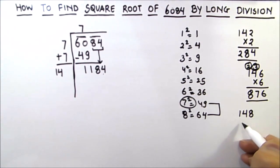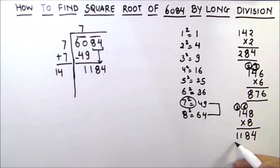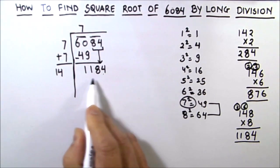So let's try 8. So 148 times 8. 8 times 8 is 64, so this is 4. 6 is carried over. 8 times 4 is 32, 32 plus 6 is 38. And 3 is carried over. 8 times 1 is 8, and plus 3 is 11. So we got the same number as 1184. So our next digit is 8.